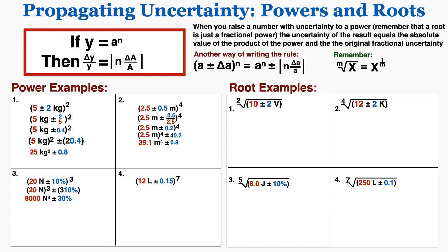So 20 raised to the third is 8,000, and that'll be plus or minus 30%. In problem four we're raising 12 plus or minus 0.15 to the power of 7. This is already expressed as a fractional uncertainty, so I just need to multiply the power by that fraction, and when I do that this is the uncertainty and the number that I get.